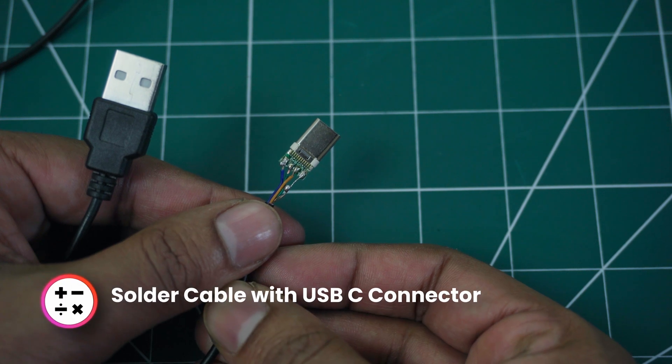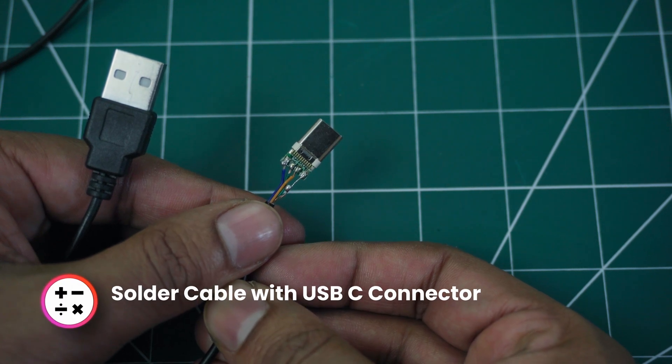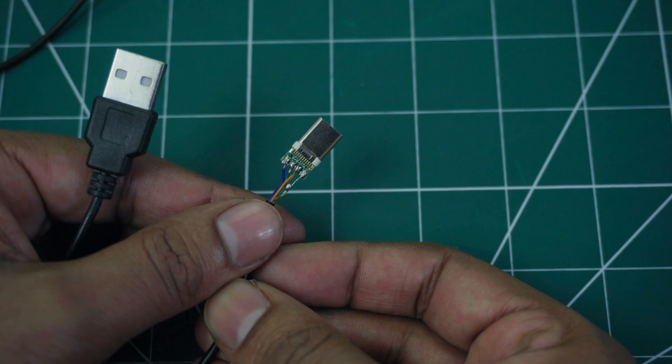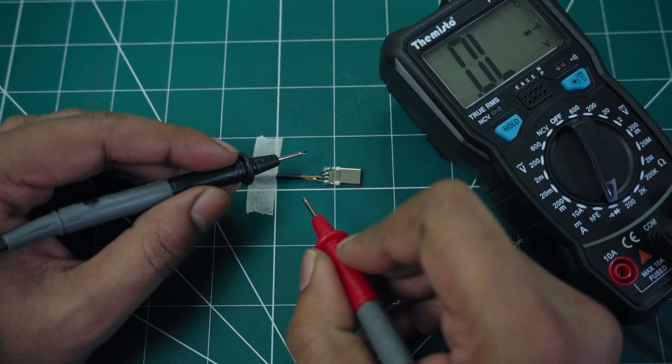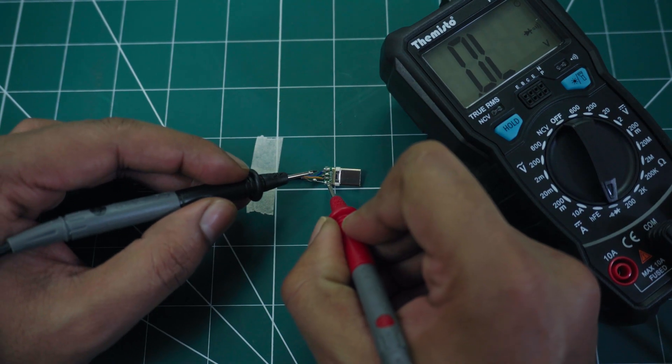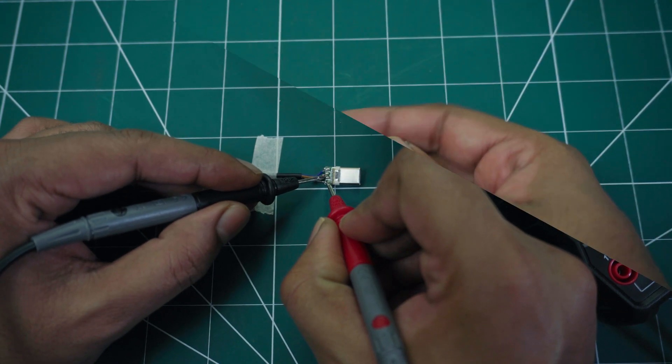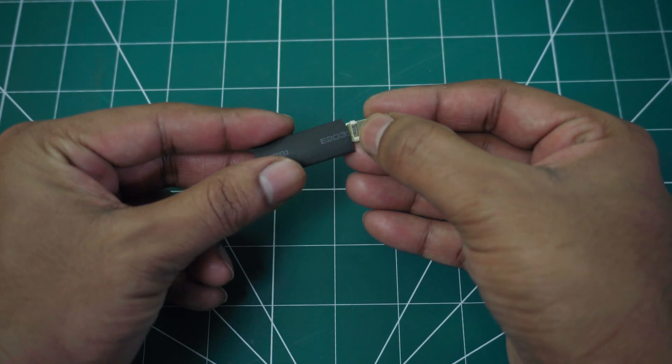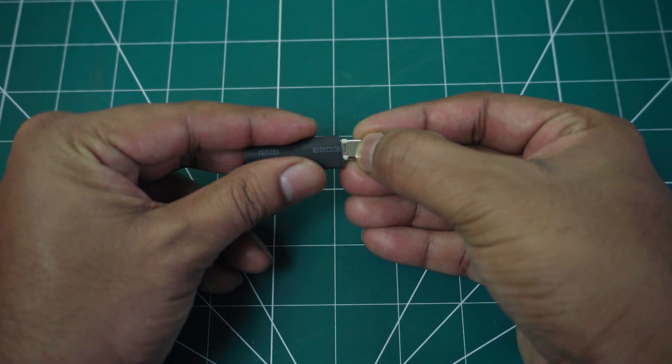Solder the USB-A cable and the USB-C connector to their respective pins. Perform a final continuity test to ensure everything is working. Finally, secure the cable and connector using the heat sink tubes.